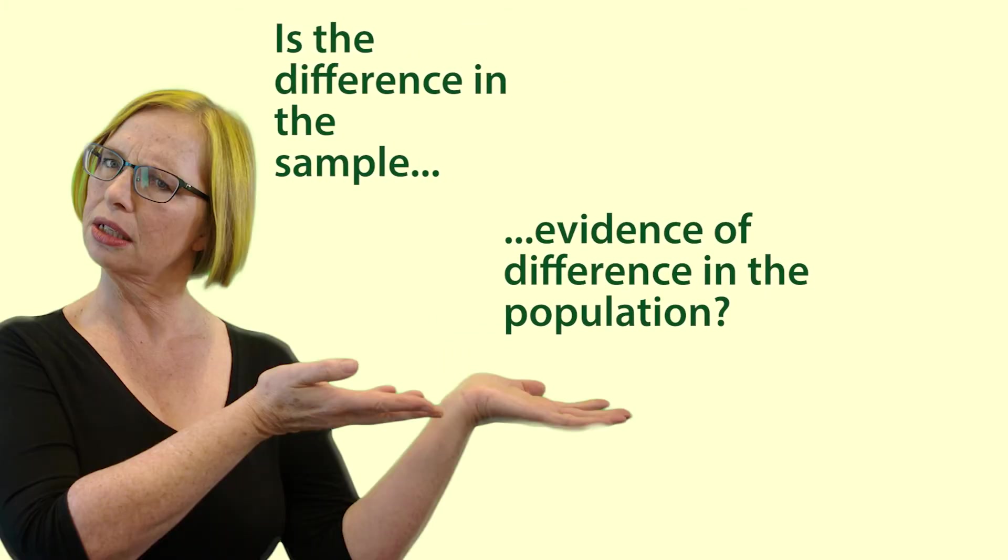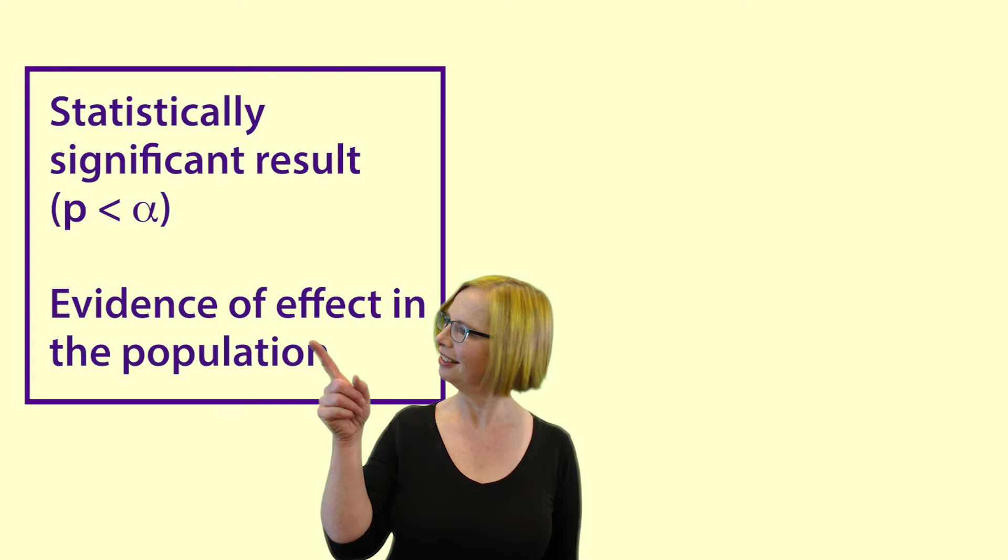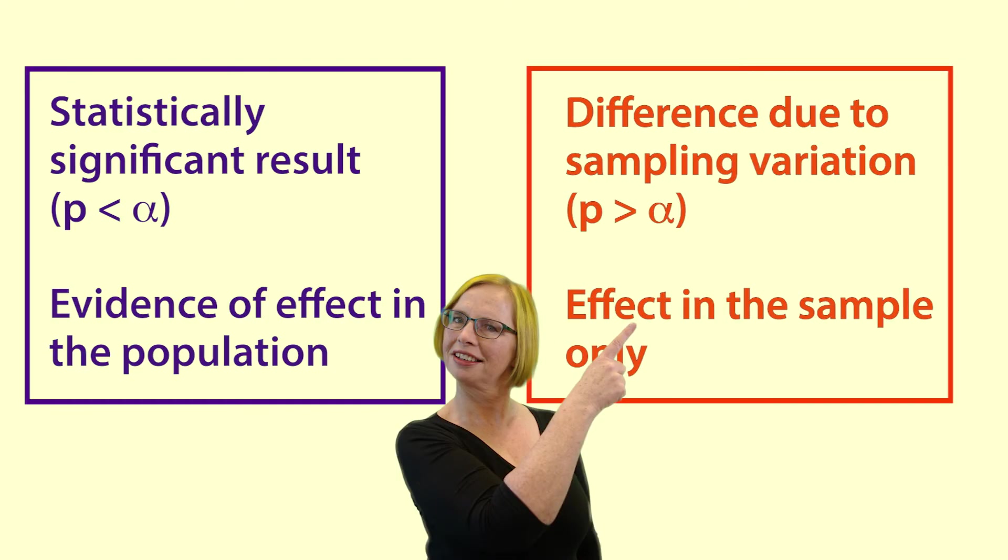We need to know whether we have evidence that a difference of means between the groups also exists in the population from which the sample is drawn. Do we have a statistically significant result or could this difference of means have occurred by chance or sampling variation?